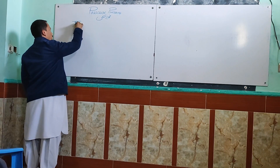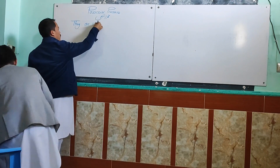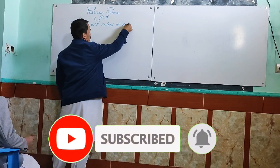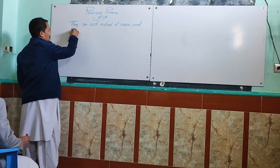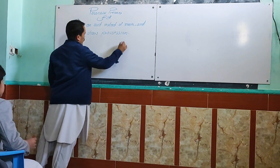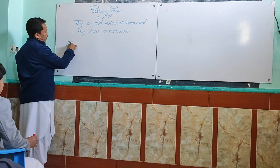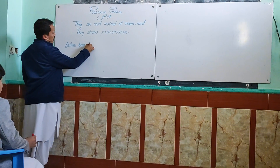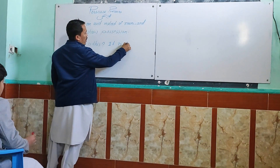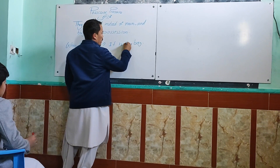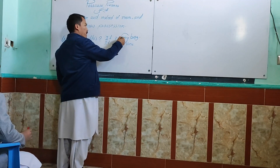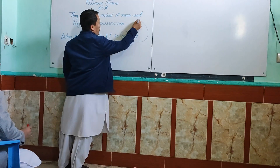The definition has two important parts: they are used instead of nouns, and they show possession. For example, 'Whose bag is this?' You can say 'It is my bag' — or you can remove both and say 'It is mine.' Here, 'my' is a possessive adjective, and 'mine' is called a possessive pronoun — that's today's lesson.